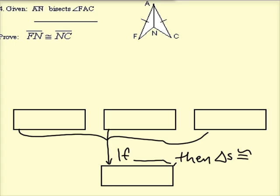So we're given that AN bisects angle FAC, and that gave us that these two angles were congruent. We also had the shared segment, and then these congruence marks tell me that FA and CA are congruent.